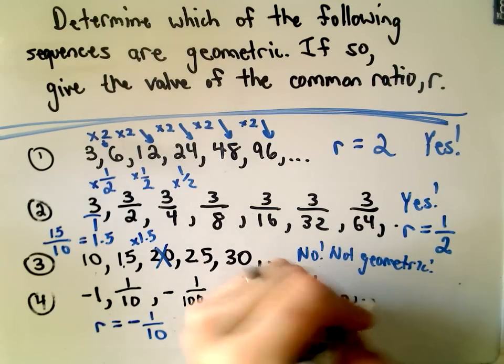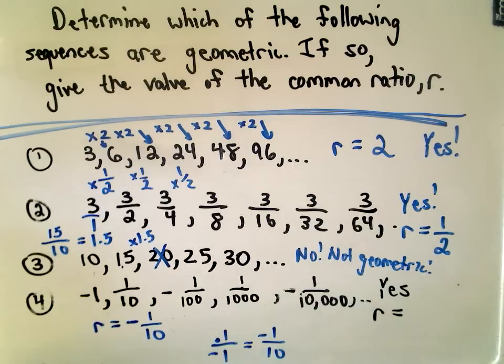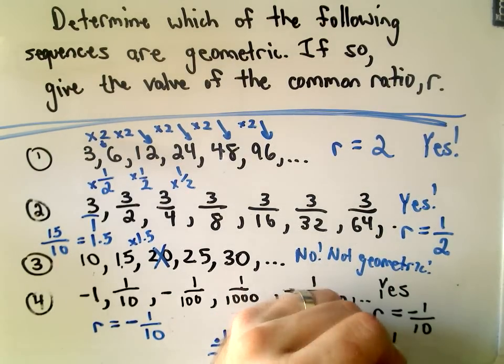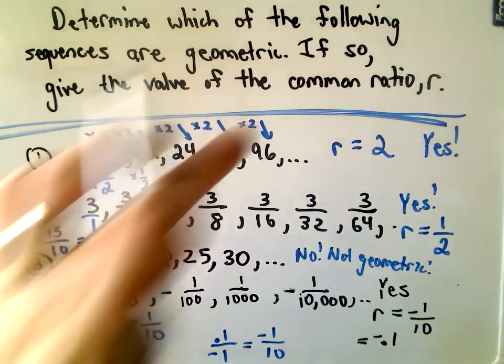So in this case, if this continues, I would say yes, this looks like it's geometric. And in this case, our R value is negative 1 over 10, or equivalently negative 0.1, however you want to use it. It's not too bad to spot geometric series.